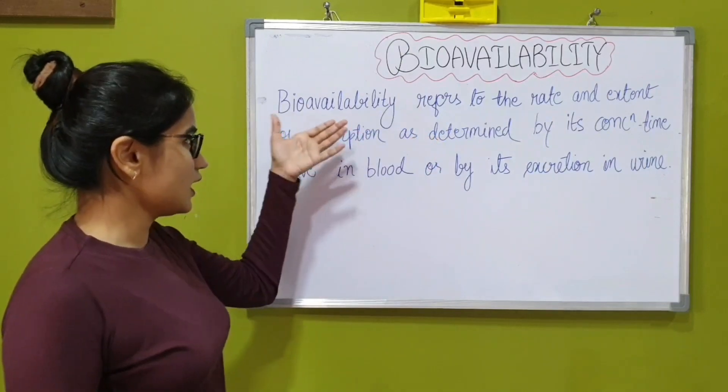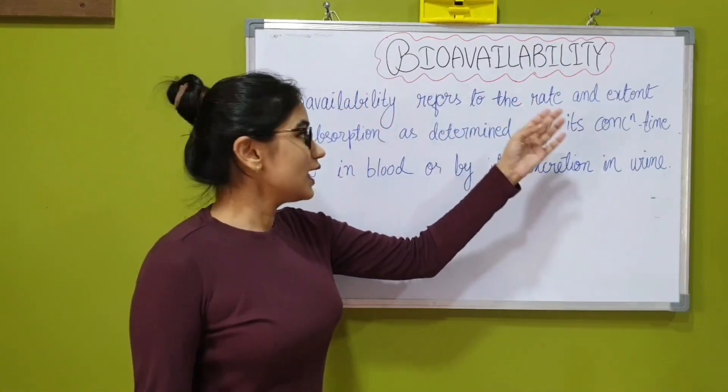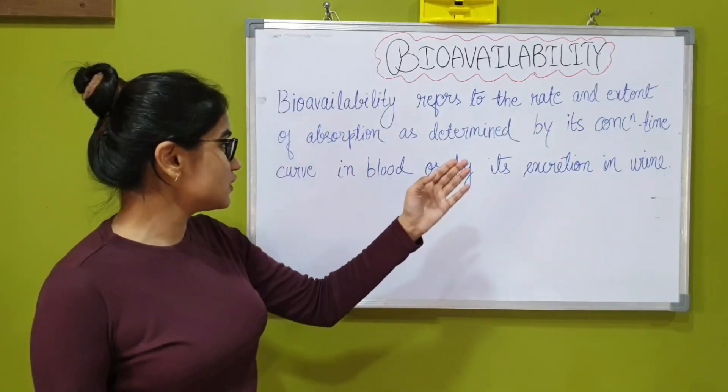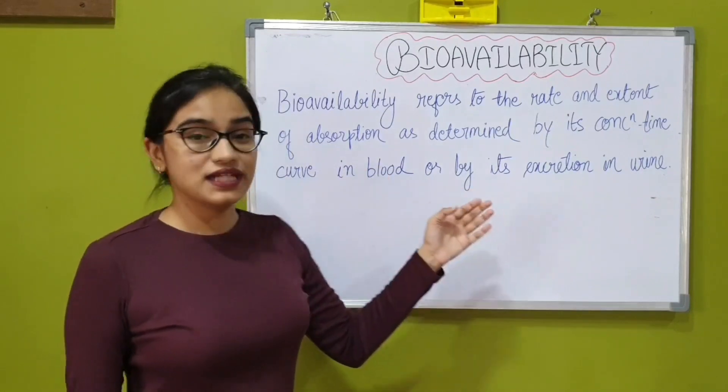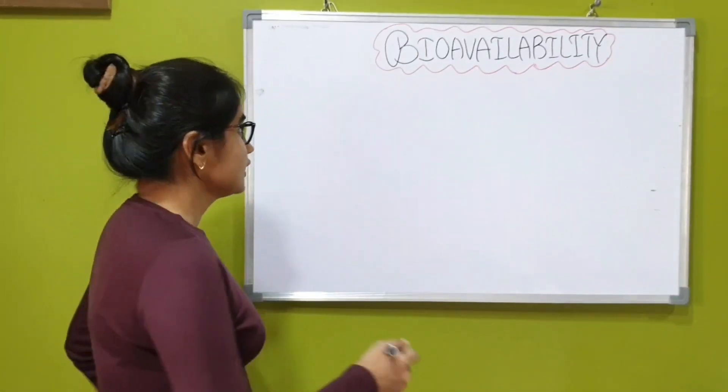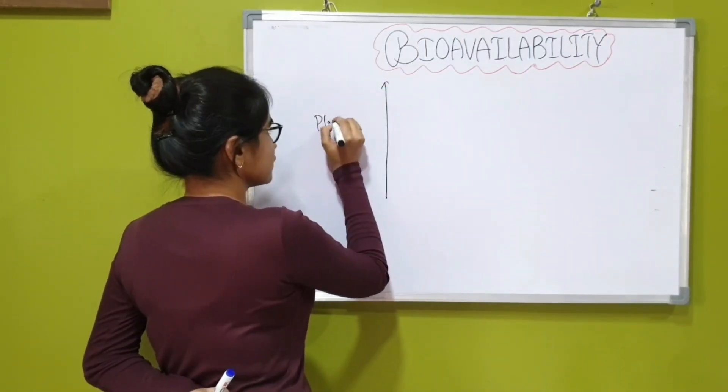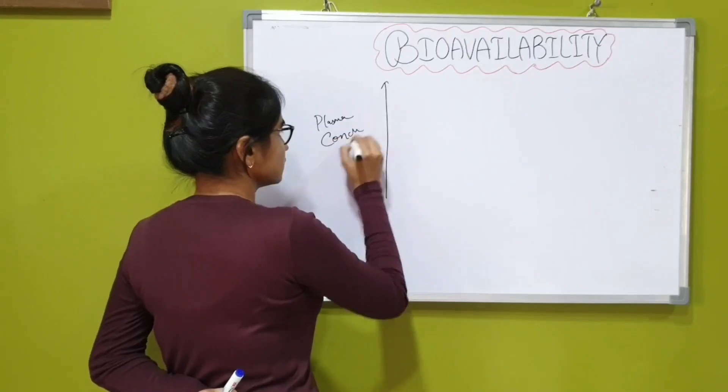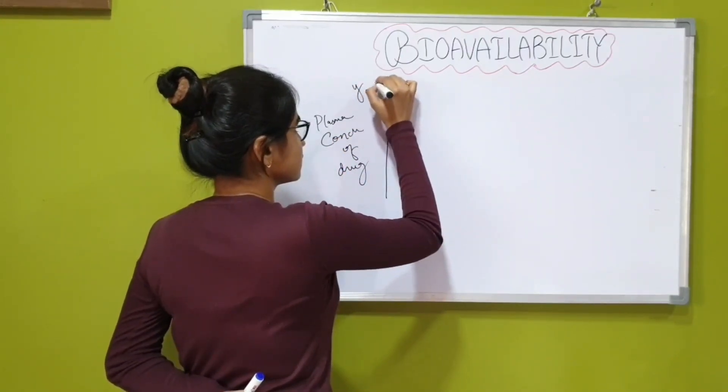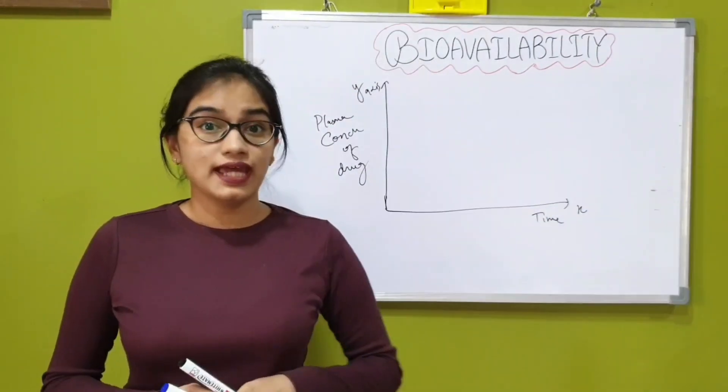The graphical definition over here is bioavailability refers to the rate and extent of absorption as determined by its concentration time curve in blood or by its excretion. Let's begin with drawing the graph. We are going to take plasma concentration of the drug on y-axis and time on x-axis.